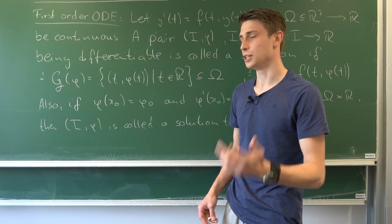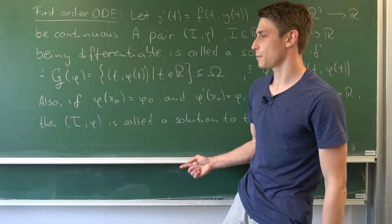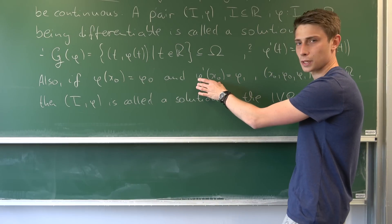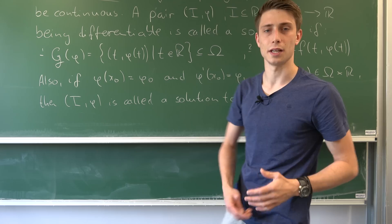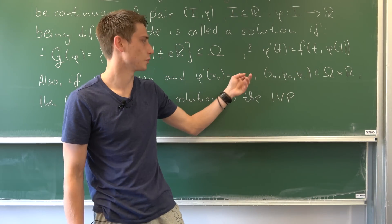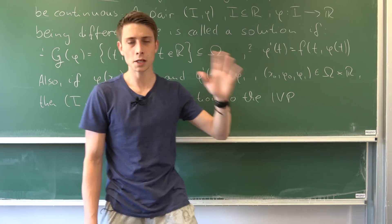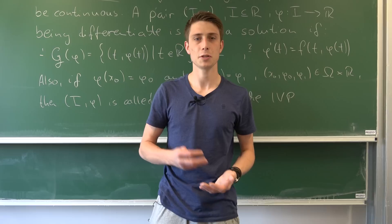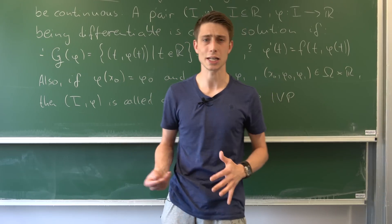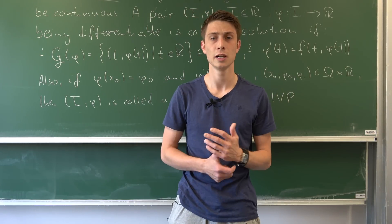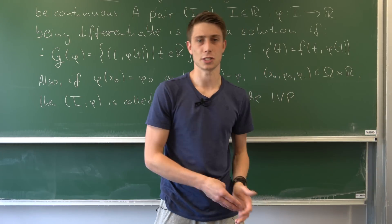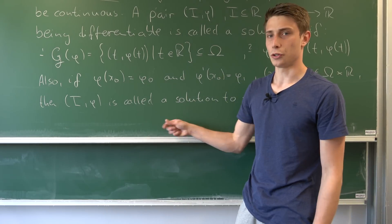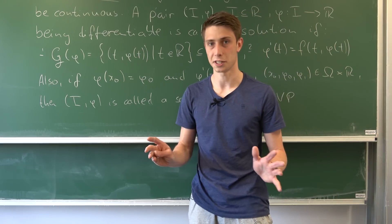There's also something called an initial value problem. If you plug some x-naught into this function phi then we end up with some phi-naught, and if you plug x-naught into phi prime then we end up with phi-one. When integrating I used the Leibniz rule for integration to make a differential equation out of an integral, and then we plug in some initial conditions to find out our constants. That's all there really is to it, but it's quite important — we encounter this situation in physics all the time.